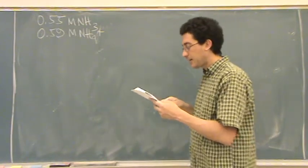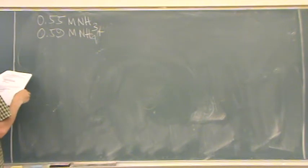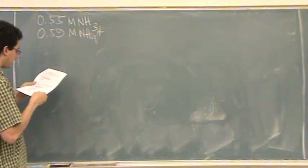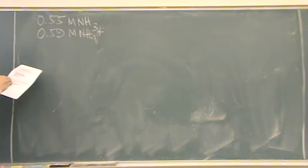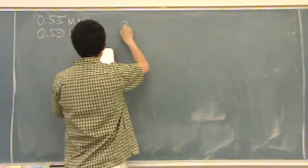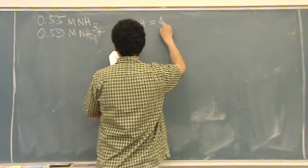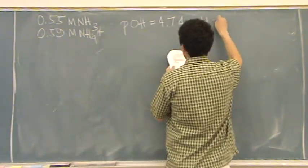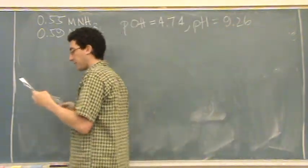Alright, so this one, yeah, it's a buffer. So we've got to set this up to do a buffer problem. We have the pOH is 4.74. That means just calculating out the pH is 9.26, because the sum of those have to be 14.